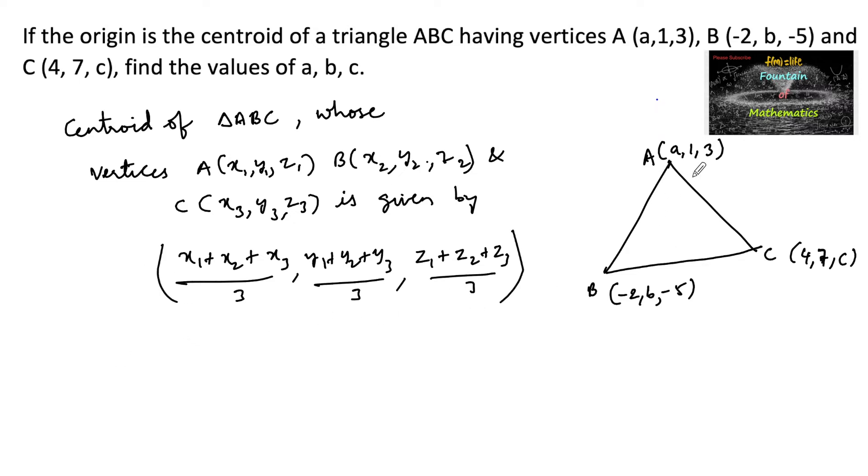So here the three vertices are given: A (a, 1, 3), B (-2, b, -5), C (4, 7, c). So we can write the centroid of the given triangle ABC is equal to